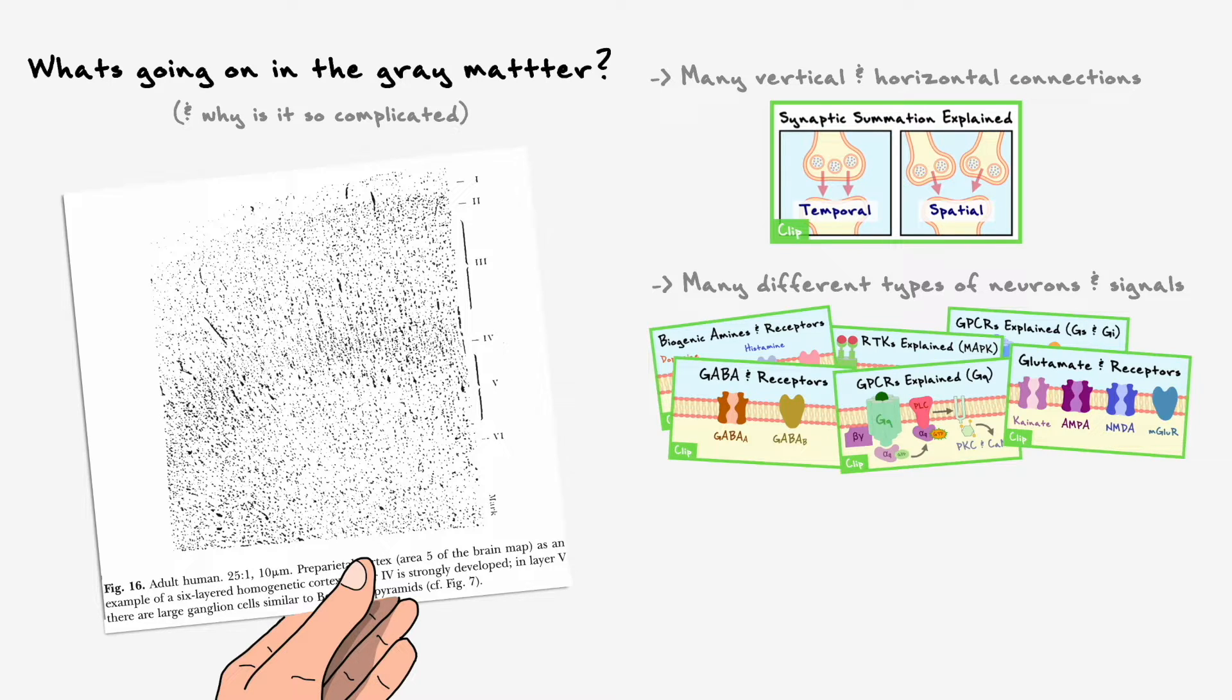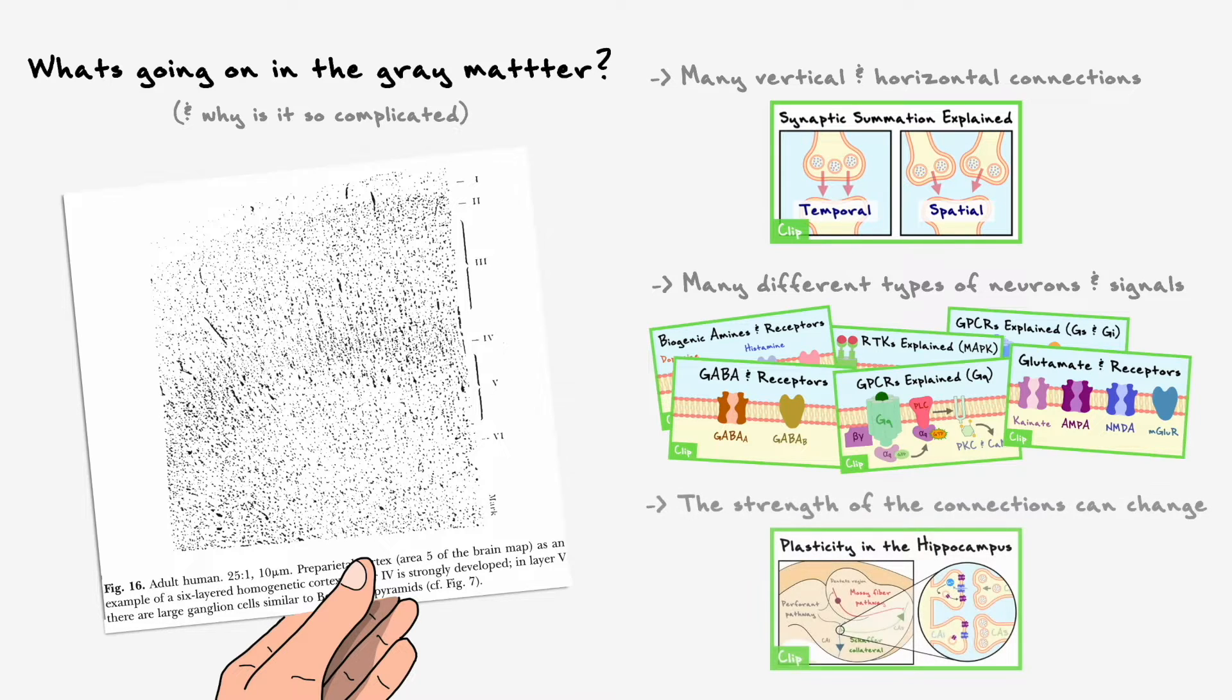One last aspect that I want to point out that makes the whole circuit even more complicated is the fact that the strength of the connections between the neurons can change through various mechanisms of plasticity, which again adds another level of complexity.